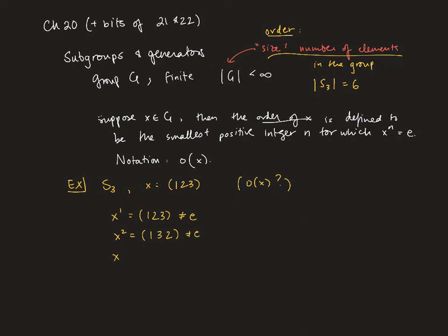But if we raise it to the third power, we get that one goes to one, two goes to two, and three goes to three, which is sort of a silly way of writing down the identity. So the order of this element is three. You'll notice it's a three cycle.